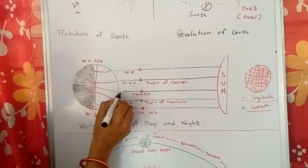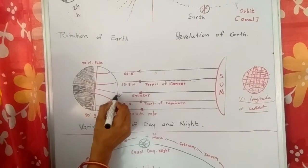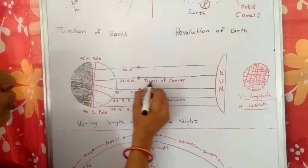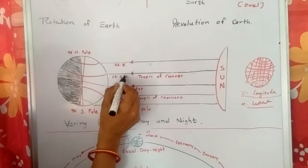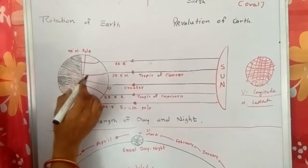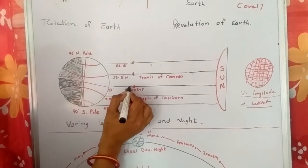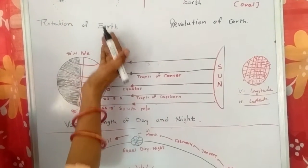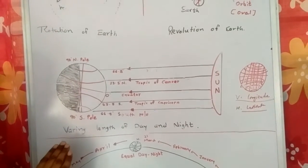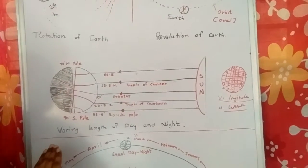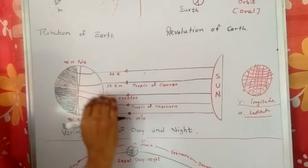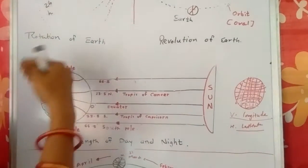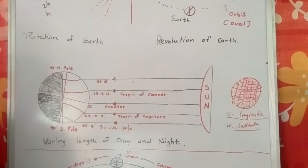The equator is at 0 degrees. There is another line, the Tropic of Cancer, at 23.5 degrees North. The equator divides the earth into two parts — the Northern Hemisphere and the Southern Hemisphere, also called Uttar Golaard and Dakshin Golaard.